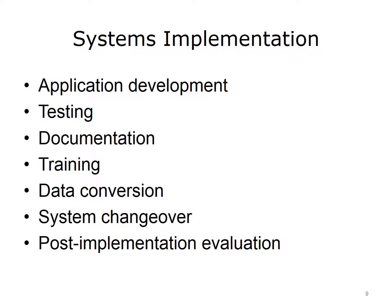At the systems implementation stage, the new system is built. It involves application development, testing, documentation, training, data conversion, system changeover, and post-implementation evaluation. Application development is the process of writing the programs and code modules. Analysts and programmers use traditional structured or object-oriented methods to translate the design into a functioning application. Testing is performed throughout the systems implementation phase. Accurate documentation describes the information system and helps users, managers, and IT staff by increasing the usability of the system, reducing errors, and improving productivity.